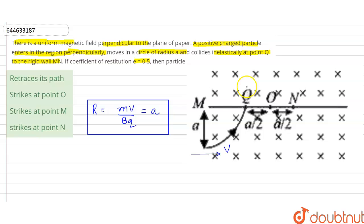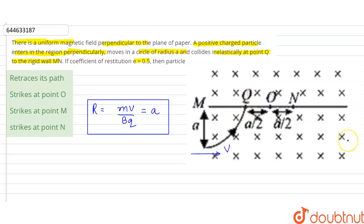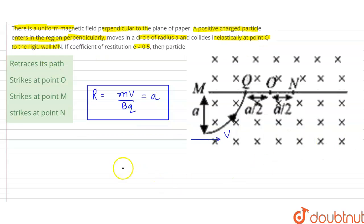Now if this particle collides here and the coefficient of restitution is 0.5, so we can say that our V' is equal to E times V. This is the relation for finding the new velocity.